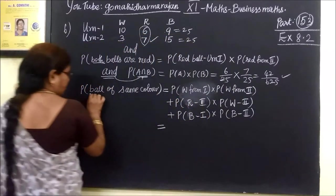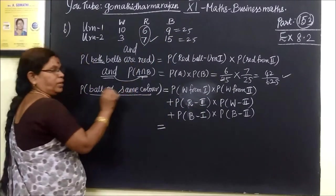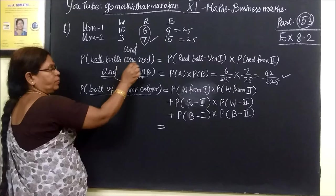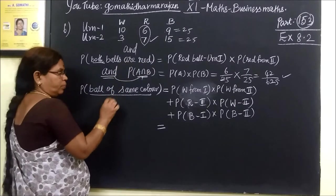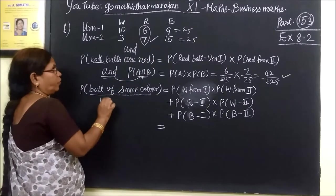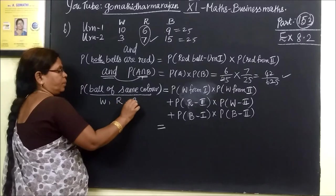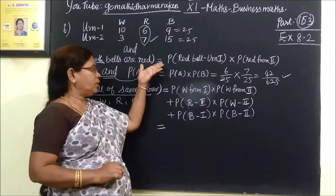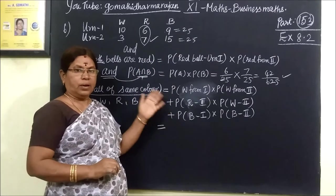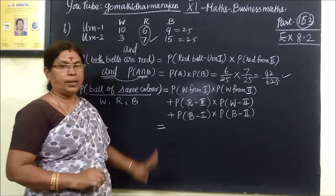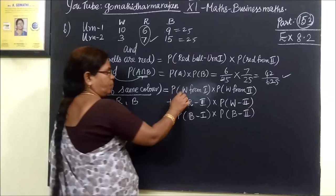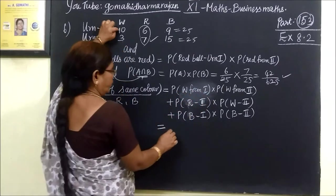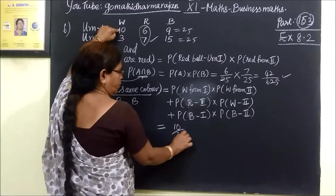Ball of same color, again, the same question is repeated. We are talking about red one, but here we are talking about white, red, black. Separate the question. The same question is repeated. I am repeating and the 3 colors we are talking about. We are talking about white from 1, white from 1 and 10 by 25.